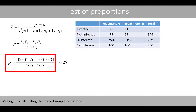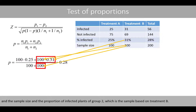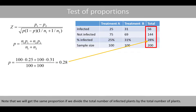We begin by calculating the pooled sample proportion. We plug in the sample size and the proportion of infected plants of sample 1, which is based on treatment A, and the sample size and proportion of infected plants of sample 2, which is based on treatment B. We see that the pooled proportion of infected plants is 28%. Note that we will get the same proportion if we divide the total number of infected plants by the total number of plants.